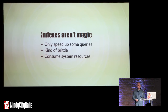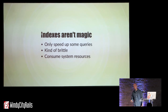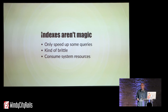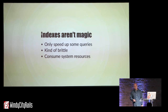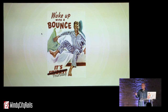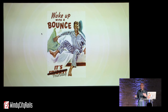But indices aren't magic — they only speed up specific queries. Adding an index on title doesn't help me if I need to query by the number of stars a book has. Indices are kind of brittle; it's surprisingly easy to change a query in such a way that the database can no longer use the index it was previously relying on. And they consume system resources, which isn't much of a problem in development but becomes notable in production.